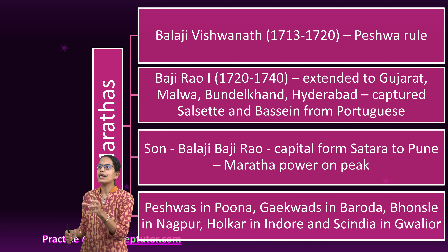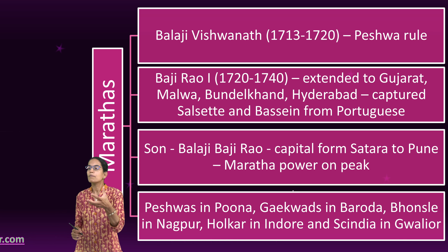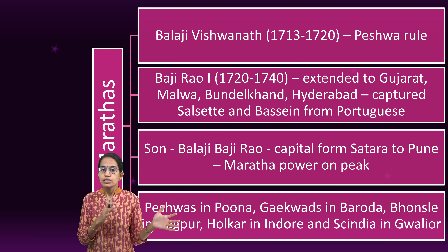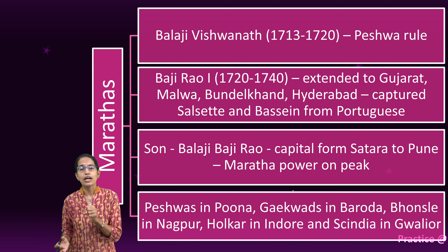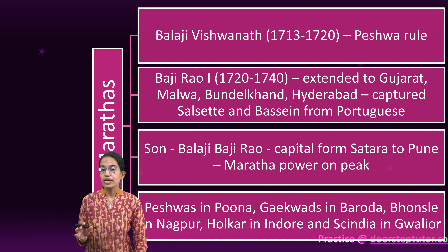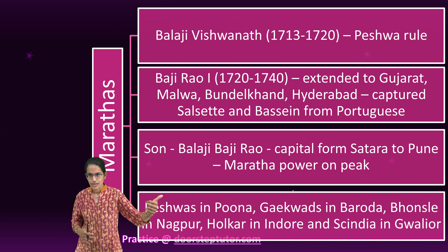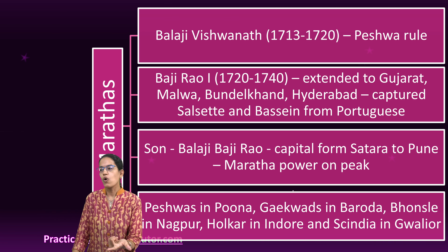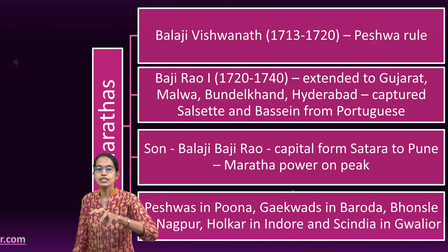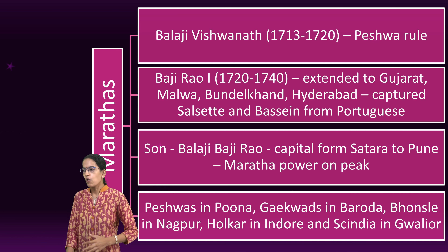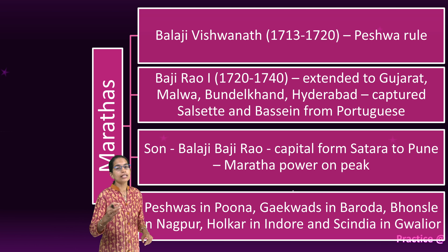Sahu was weak, and as a result Balaji Vishwanath, who was the Peshwa — meaning the prime minister — said that the post of Peshwa should be hereditary. He also forced the Mughals to restore the territories which were lost by Sahu, and he fought for the right of Marathas to collect Chauth and Sardeshmukhi.